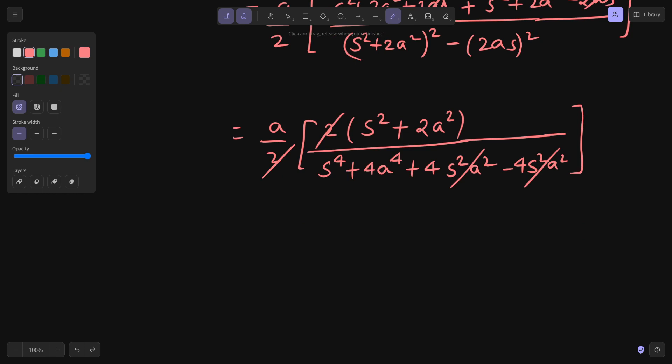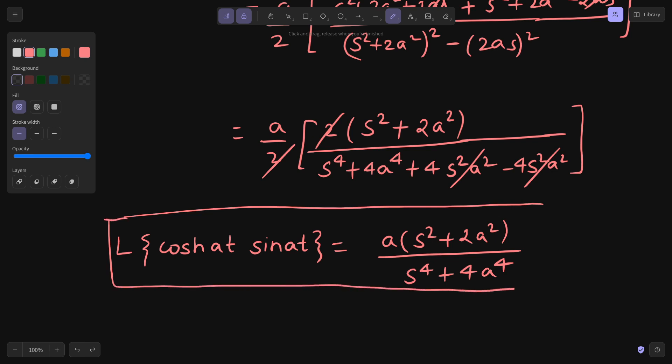This thing which you were looking for, that is Laplace of hyperbolic cos of at sine of at, gives you in numerator a times s square plus 2a square, and in denominator you have s power 4 plus 4a power 4. That's it. That's how it's simplified.